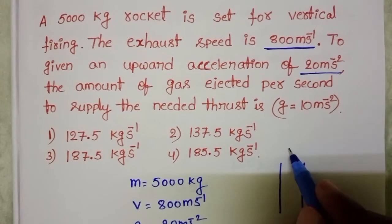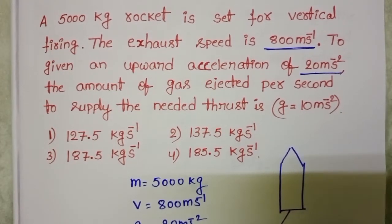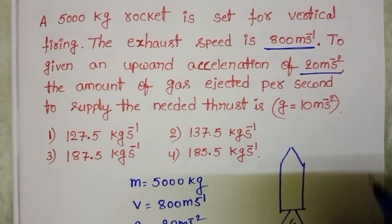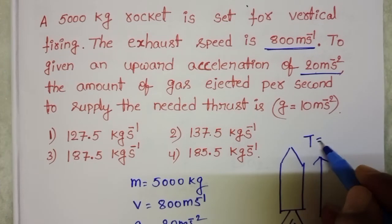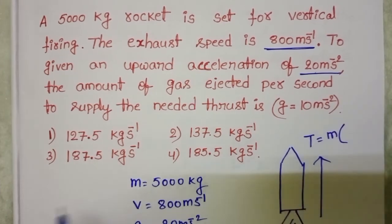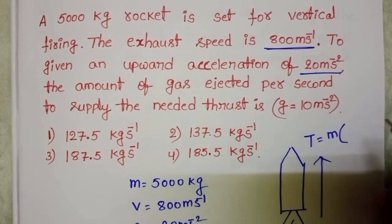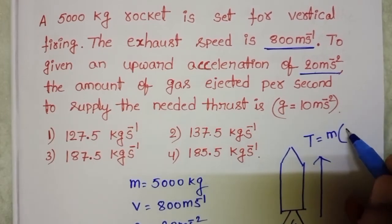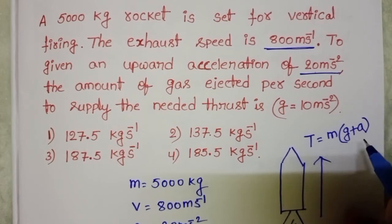When a rocket is firing in upward direction, it ejects gases in downward direction. So, required upward thrust equals mass into effective gravity. In downward direction, acceleration due to gravity is acting. So, here effective gravity becomes G plus A. This is the required thrust.